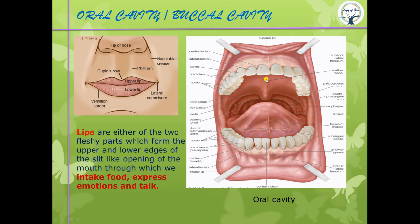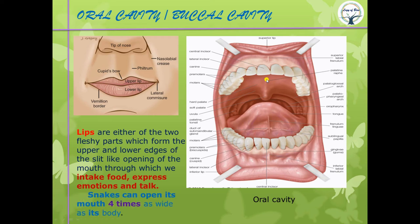From this slide, remember: the cupid's bow, philtrum, uvula and its function, hard palate, soft palate, and especially the palatine rugae. Palatine rugae, also called plicae palatinae, are tiny muscular ridges present in the hard palate. You can feel them by touching your tongue to your palate.